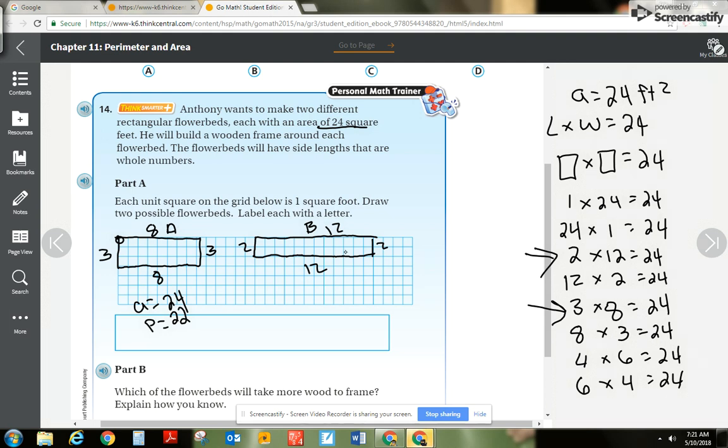So we got flower bed A, flower bed B. I might as well find the area, we know that's 24. These are the same. My perimeter, 2 plus 12 is 14. Half of it's 14, the other half's going to be 14. So I can just put those together and I get my perimeter of 28.